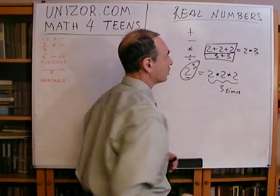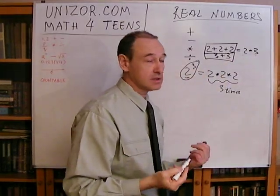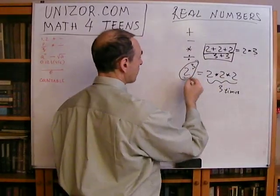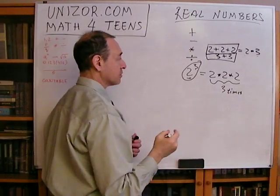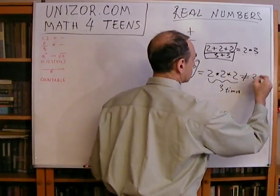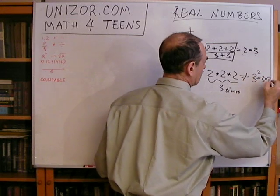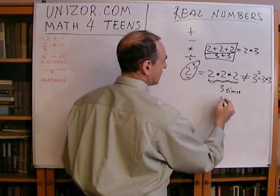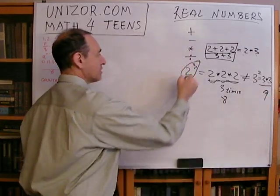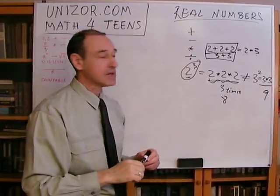In this case, the operation of power is not commutative, because two to the third is not equal to three to the second — this is eight and this is nine. So the operation of power is not commutative. But this is just a side note.